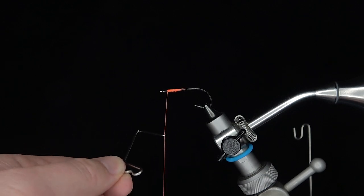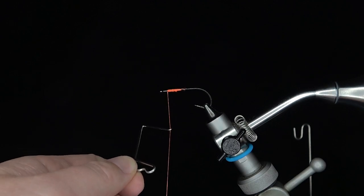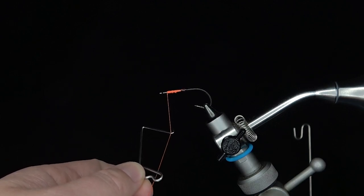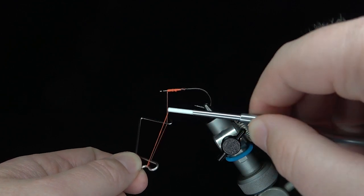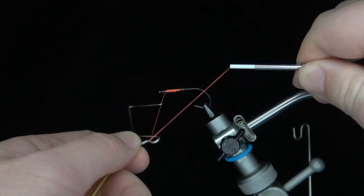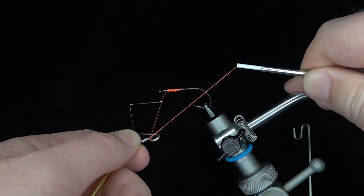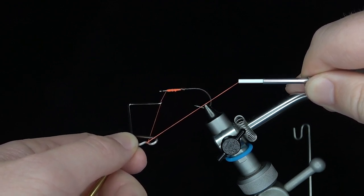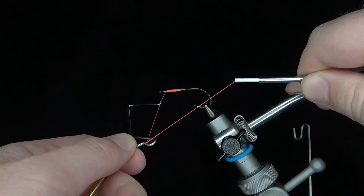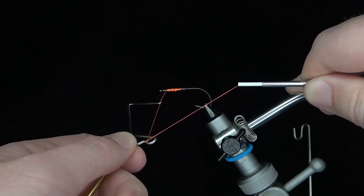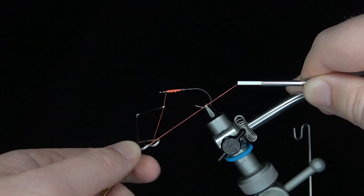I'm going to pinch it at the top, take the hook, hook the top of the thread, and take my bobbin and pull it up into that groove at the bottom. I'm going to take my right hand and rest it on the vise, and I want my bobbin pointed out parallel to the shank of the hook, so it should be right in line with the shank.